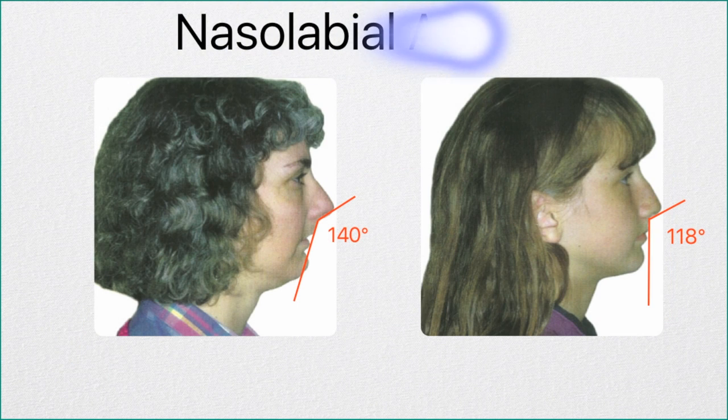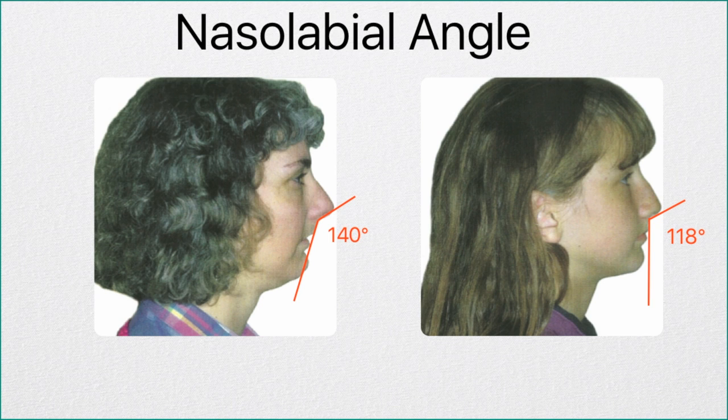Let's look at two patients — a mother and her daughter. The mother was missing an upper lateral incisor and had a peg lateral incisor. She underwent orthodontic treatment in which the peg lateral incisor was extracted, the space for that tooth was closed, and the missing lateral incisor space was closed. She also had lower bicuspid teeth removed and was retracted back, resulting in a 140 degree nose lift angle, which is a very, very large number.